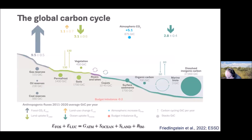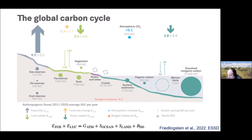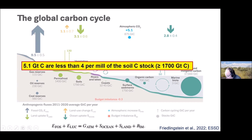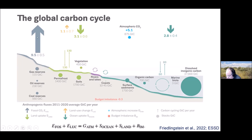In order to understand how much this is, we can relate it to the global carbon cycle. The arrows indicate how much carbon we either emit or take up into our ecosystems, while the dots indicate the stocks. We see 9.5 billion tons emitted by fossil fuel combustion, plus 1.1 billion tons from land use change, giving 10.6 billion tons.